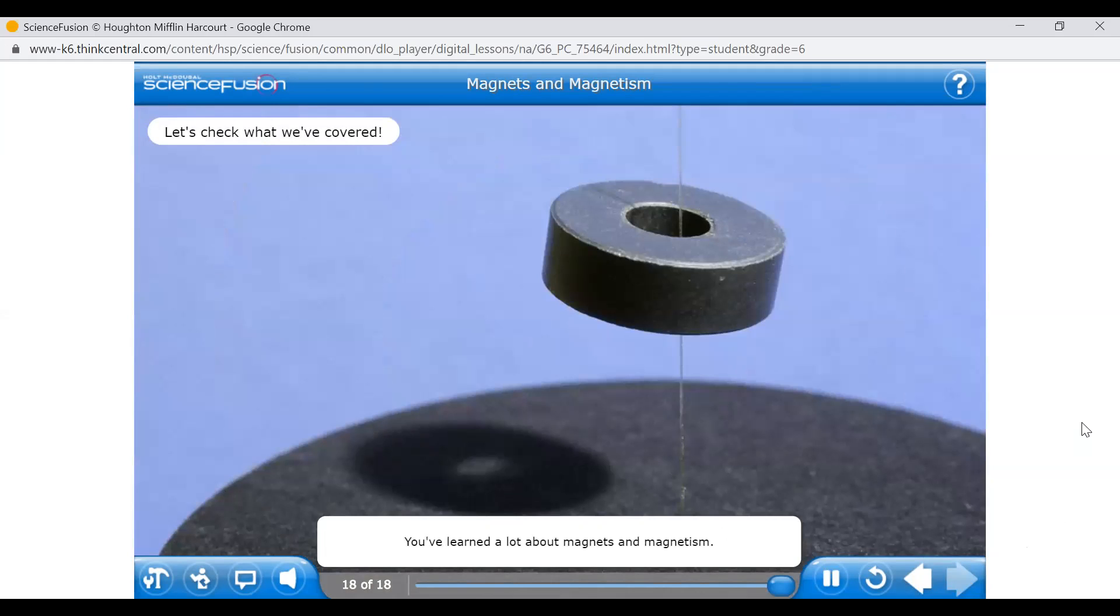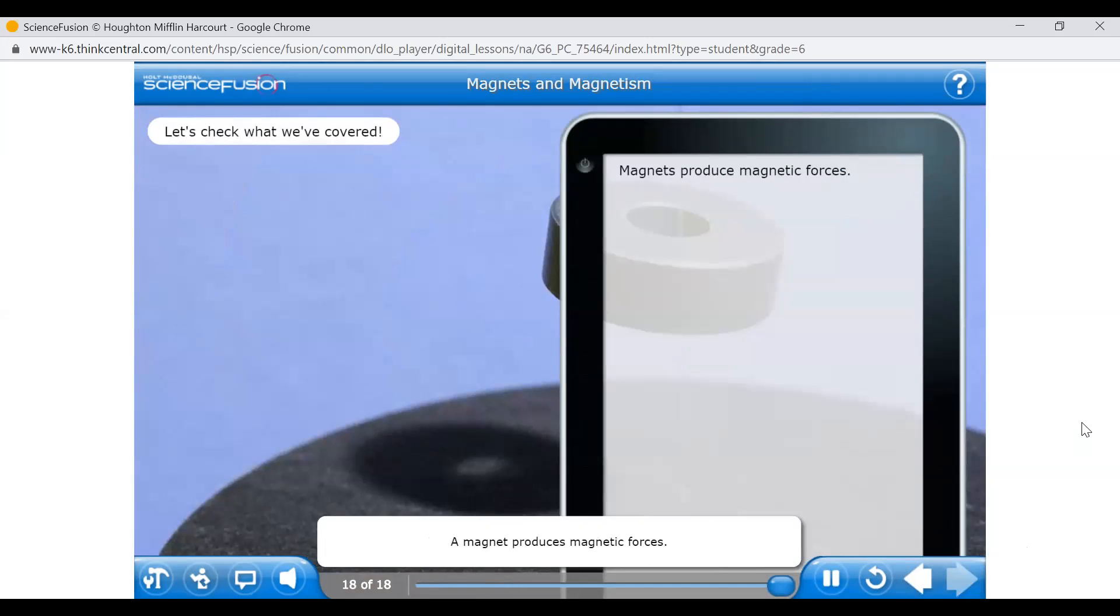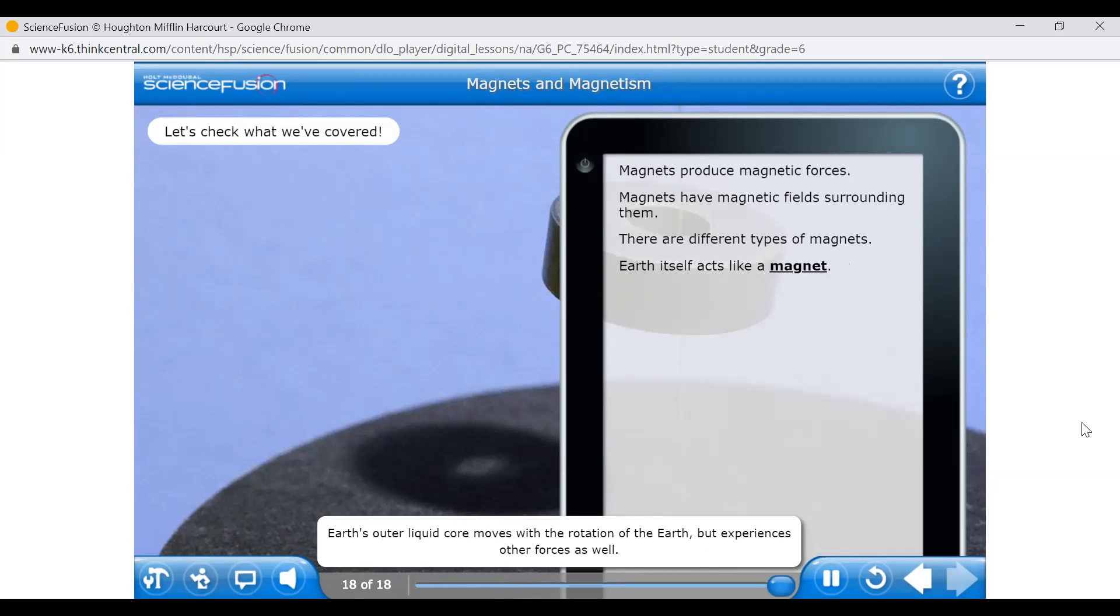You've learned a lot about magnets and magnetism. Let's review the main ideas from the lesson. A magnet produces magnetic forces. These magnetic forces are strongest at the ends or magnetic poles of a magnet. Magnets have magnetic fields that surround them and provide the magnetic force. The magnetic fields are strongest at the magnetic poles. There are different types of magnets, each with different properties. Some types of magnets include ferromagnets, magnetite, electromagnets, temporary magnets, and permanent magnets. Earth's outer liquid core moves with the rotation of the Earth, but experiences other forces as well. The movement of charges in the core give rise to Earth's magnetic field, which has many of the properties of a bar magnet. The poles of Earth's magnetic field are at locations different from the geographic poles. The position of the magnetic poles and the strength of Earth's magnetic field affect where auroras are seen and how bright they are. Now that you've finished this lesson, if you wish, you can go back and review any part of the lesson again.